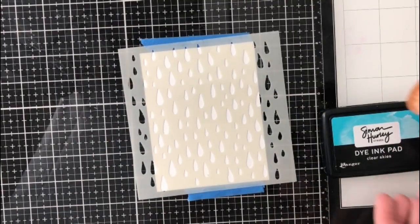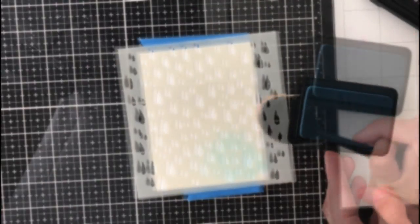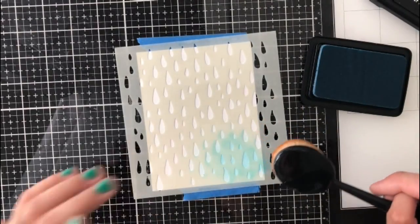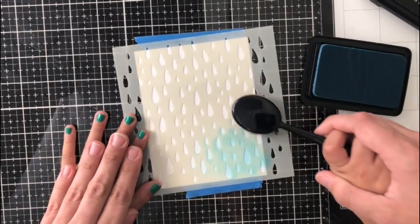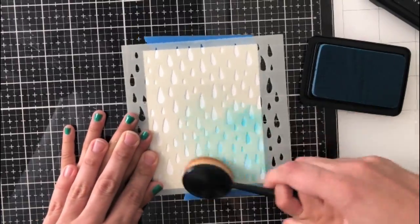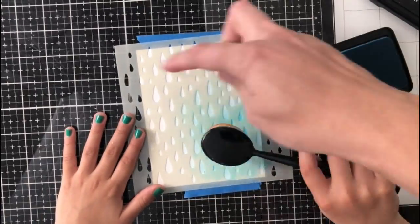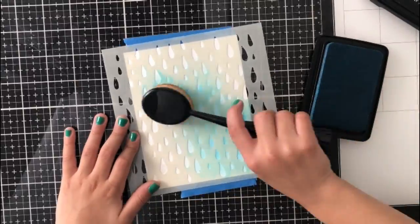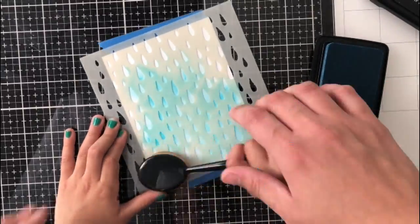We used a blender brush and clear skies and blended it all over the stencil. My mom helped me make circles when I was blending.